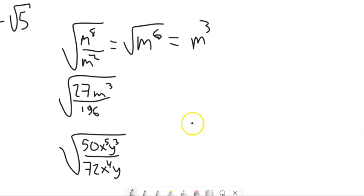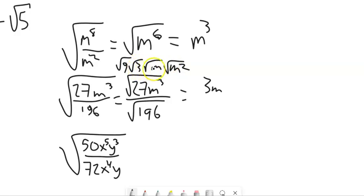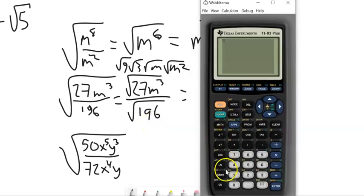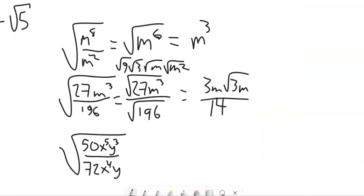Square root of 27 m cubed over the square root of 196. I'll work in pieces. For m cubed: square root of m squared is m, so I get m times the square root of m. For 27: that's 9 times 3, so the square root of 9 is 3. Putting it together: 3m times the square root of 3m in the numerator. For 196: checking if it's a perfect square — 4 times 49 is 196, and the square root of 196 is 14. So the answer is 3m root 3m over 14.